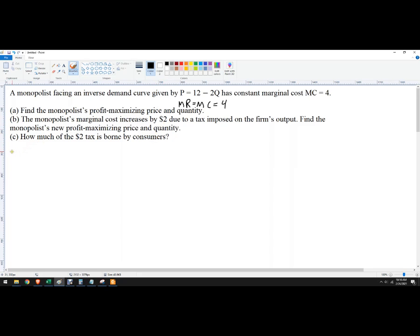So to get the marginal revenue, what we need to do is find the partial derivative of the total revenue function. So what is total revenue? Total revenue is price times quantity. In this case, we know what price is. So we're given price is 12 - 2Q.